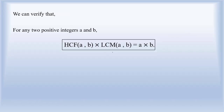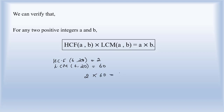From the above example, we can obtain the formula: for any two positive integers A and B, HCF of (A, B) into LCM of (A, B) equals A into B. From our example, HCF of 6 and 20 was 2, and LCM of 6 and 20 was 60. So 2 into 60 equals 6 into 20, which gives 120 equals 120. Left hand side equals right hand side — this verifies the formula.